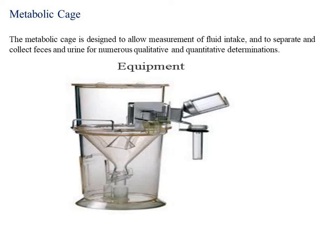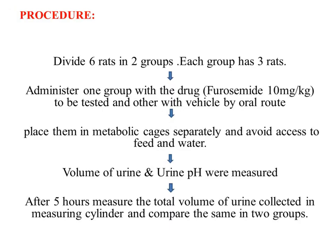As we are checking the diuretic activity, we will focus on the collection of urinary volume. First, we will take six rats and divide them into two groups, each group having three rats. One group is the test group and one is the control group. For the test group we will provide furosemide at 10 mg per kg, and for the control group we will provide carboxymethyl cellulose in normal saline.